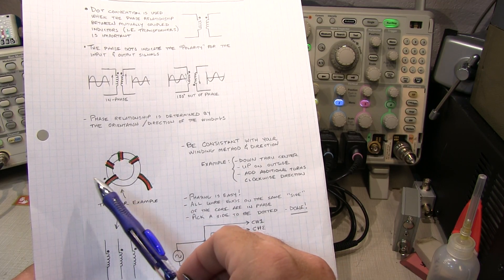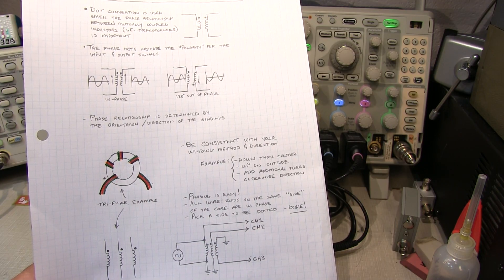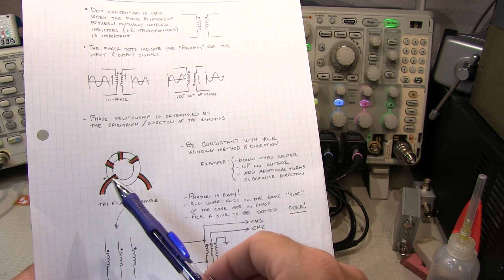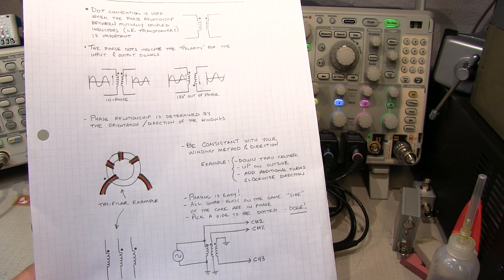You can put little kinks in the wire, one kink, two kinks, three kinks for the different turns and that kind of thing. And once you put all the windings on, it's a very simple matter to go through with an ohmmeter to figure out which wire is connected at the other end.